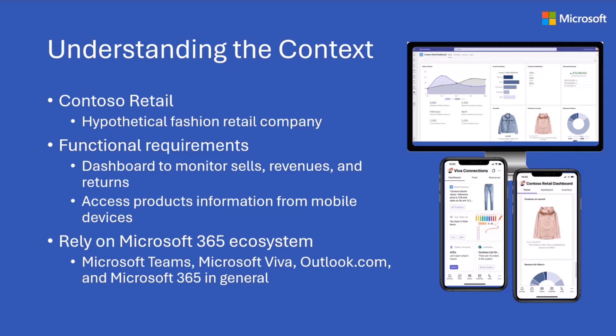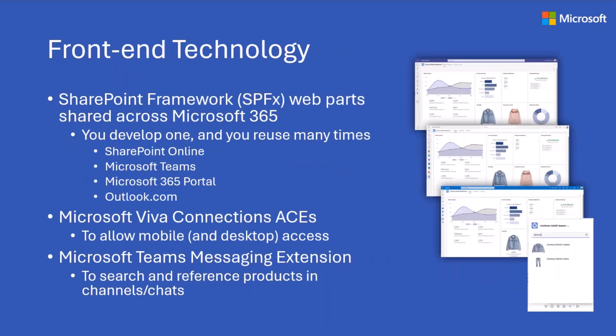The idea is to give you an overview of what you can and should do to build such a solution. From a front-end technology point of view, we created a bunch of web parts with SharePoint Framework to host those web parts both in SharePoint Online and in Microsoft Teams as a personal app. At the same time, we used the exact same SharePoint Framework solution to also build an adaptive card extension. So from a packaging and deployment point of view, one solution deployed at the customer site gives you the option to run your code in Viva Connections, SharePoint, and Teams.